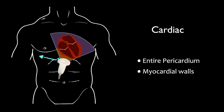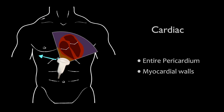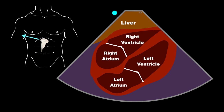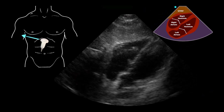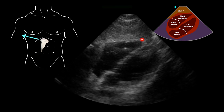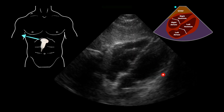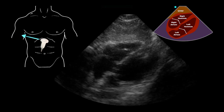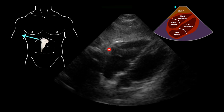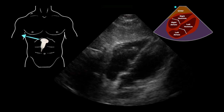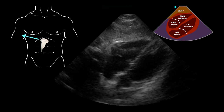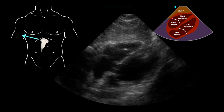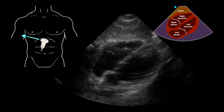With the probe marker pointed to the patient's right, we're going to look up towards the patient's left mid-clavicular line to left shoulder, and we'll get a view where we can see all four chambers of the heart — the right ventricle will be abutting right up against the liver wall. We're going to evaluate this area for free fluid along the right side of the heart, because an acute pericardial effusion or blood within the pericardial sac can compromise filling of the right ventricle, leading to hypotension.